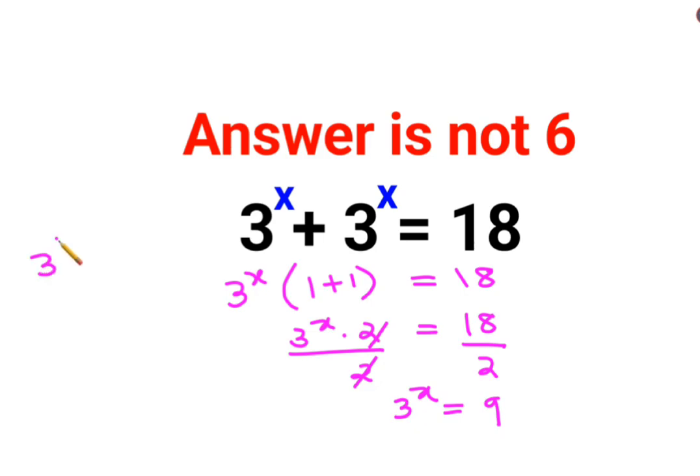Now remember that 3 raised to x and we had 9 which can be written as 3 square. Now since the bases are same, I can say value of x is just 2.